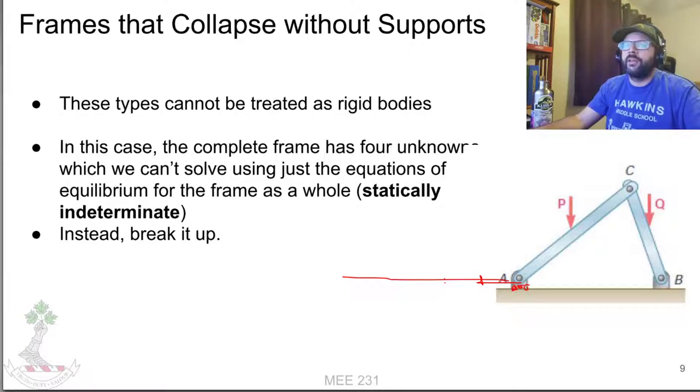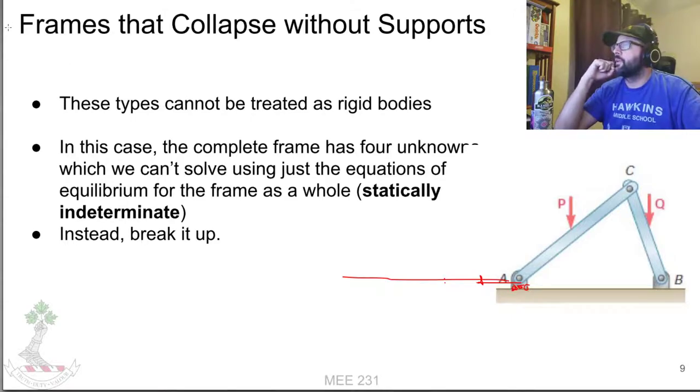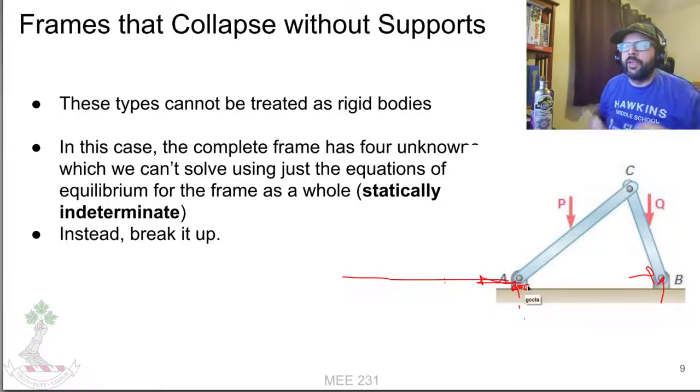In that instance, we got four unknowns for the reactions: X and Y at B and X and Y at A. We've only got three equations if we were treating the entire structure as just one rigid body. So we're not able to solve for those four reactions using just those equations. We need to do something else, so we'll break it up.